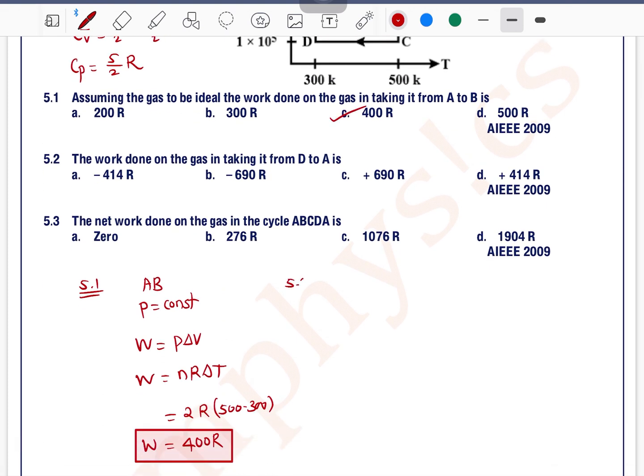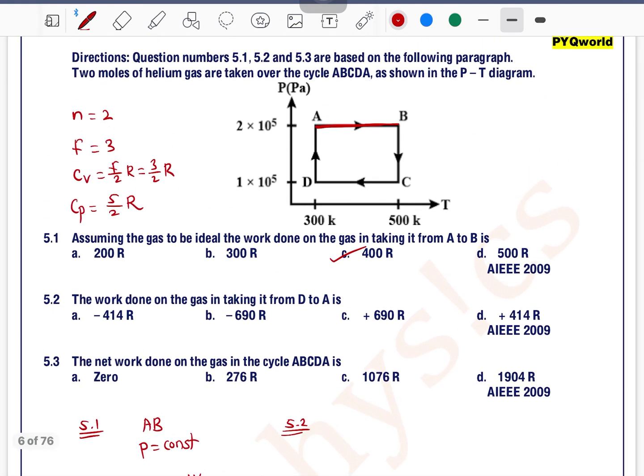This is the work done in process AB. 400R means option C is the correct one.